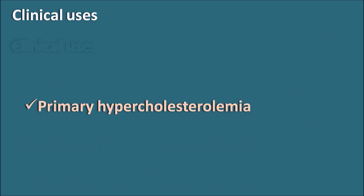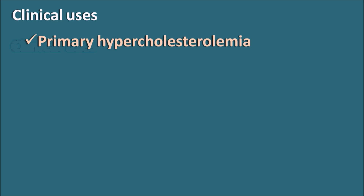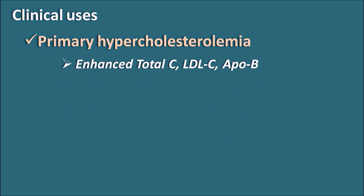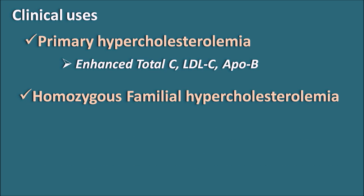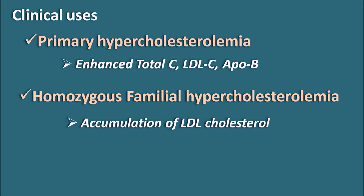Clinical uses: Ezetimibe can be used in primary hypercholesterolemia where there are increased cholesterol levels. It can be given particularly when there are increased levels of total cholesterol, LDL cholesterol, and Apolipoprotein B. Ezetimibe is also given in homozygous familial hypercholesterolemia, which is an inherited disorder where there is decreased removal of LDL cholesterol, leading to its accumulation. In such cases, Ezetimibe can decrease the absorption of cholesterol, thereby reducing the accumulation of LDL cholesterol.